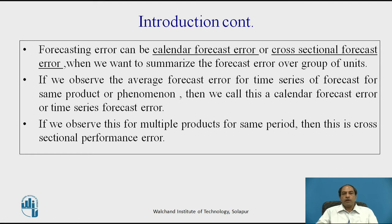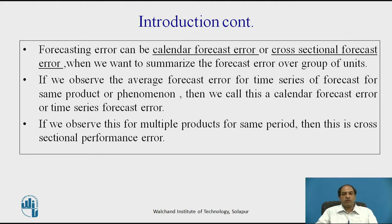Forecasting error can be a calendar forecast error or a cross-sectional forecast error, when we want to summarize the forecast error over a group of units. Forecasting is interesting data interpretation — as the forecasting period is longer, the error will be more; as the forecasting period is shorter, the error will be smaller. It also depends on geographical factors, calendar months, areas, units, and product mix. If we observe the average forecast error for a time series of the same product, we call this a calendar forecast error or time series forecast error.